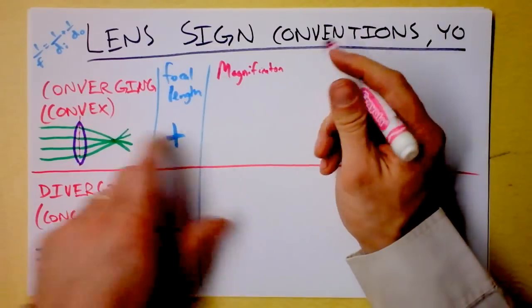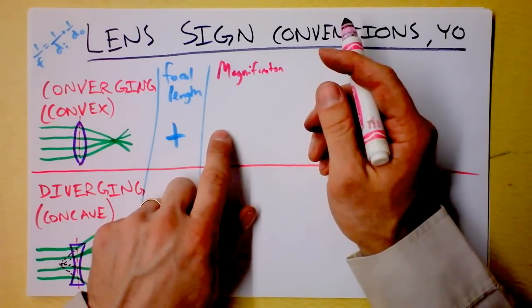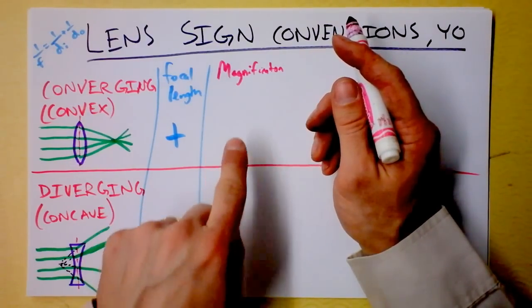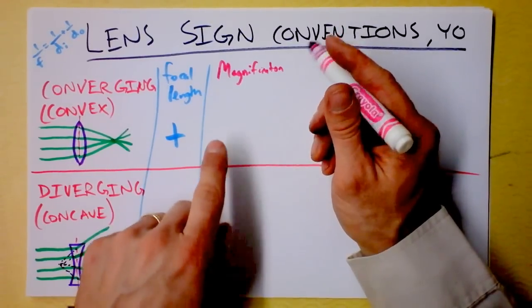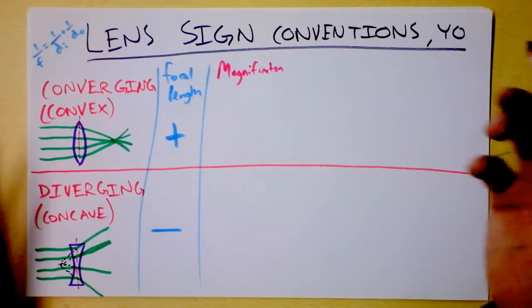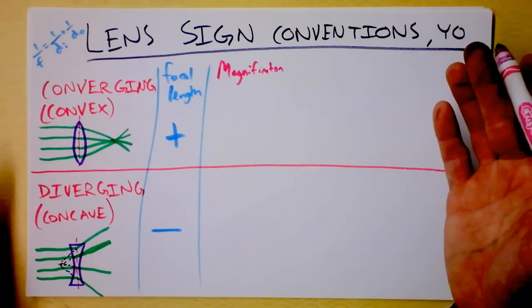Magnification. Now a converging lens, see the thing is, a converging lens generally has magnification that's negative, but not always. So I can't even use this system. I'm just going to throw the whole thing away.